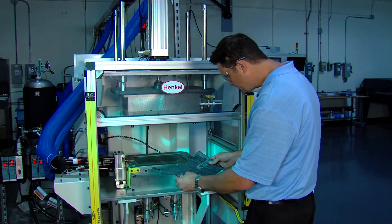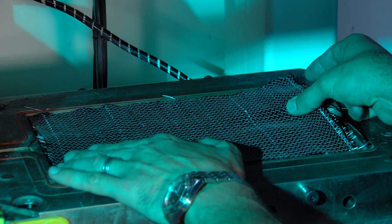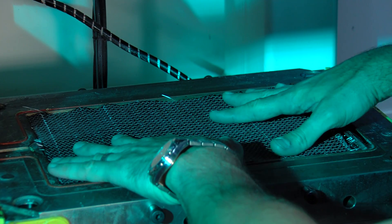We put one of these units in here at Henkel so that we could test our Loctite Max series polyurethane based materials with various fabrics that are out there in the industry to be utilized for lightweight composite components.